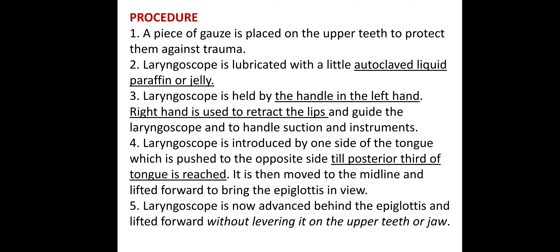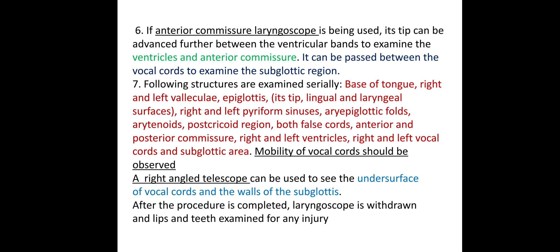The laryngoscope is then moved to the midline and lifted forward to bring the epiglottis into view. It is now advanced behind the epiglottis and slightly forward without levering it on the upper jaw. If an anterior commissure laryngoscope is used, its tip can be advanced further between the ventricular bands to examine the ventricles and anterior commissure, and can be passed between the vocal cords to examine the subglottic region.